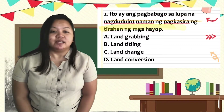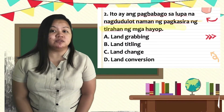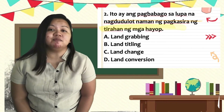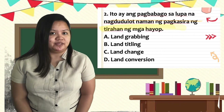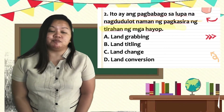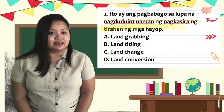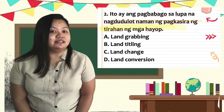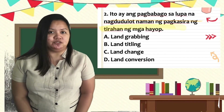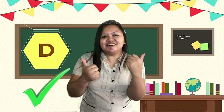Number 2: Ito ay ang pagbabago sa lupa na nagdulot naman ng pagkasira ng mga tirahan ng mga hayop. Letter A, land rabbit. Letter B, land tightly. Letter C, land change. O letter D, land conversion. Kung ang sagot mo ay letter D — tama ang iyong sagot!